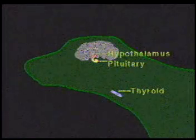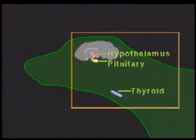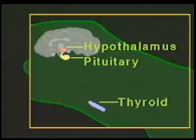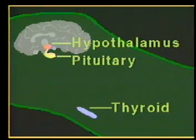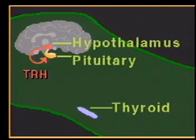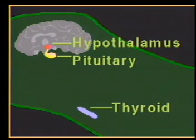The production of T3 and T4 in a normal functioning gland is controlled by a hormone produced by the hypothalamus, thyrotropin-releasing hormone, or TRH. When released into the hypothalamic-hypophysial portal system, TRH is carried to the anterior pituitary gland.